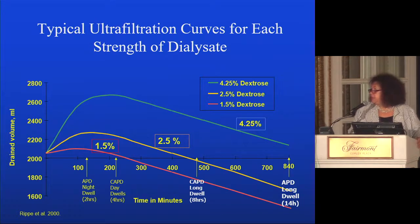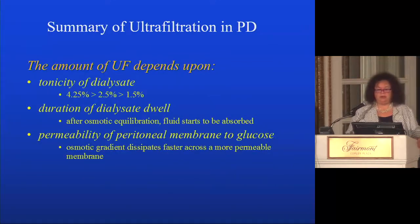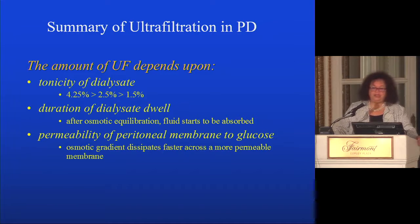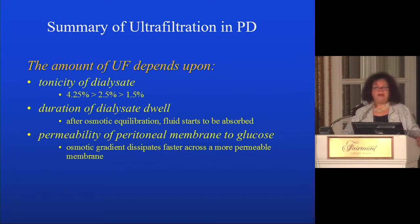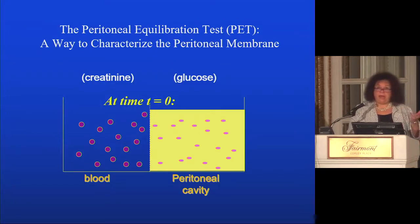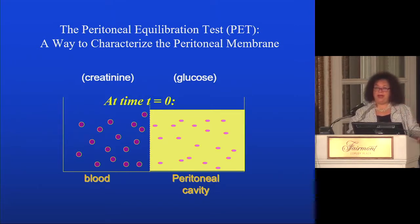How much you ultrafilter depends on the strength of the solution used, how long you leave it in, and the patient's intrinsic permeability to glucose and other solutes. Unlike hemodialysis where dialyzers are standardized, peritoneal dialysis varies from patient to patient — that is why we have the peritoneal equilibration test, which characterizes the peritoneal membrane. It doesn't tell you how much dialysis the patient is getting; it tells you what kind of dialyzing membrane the patient has.